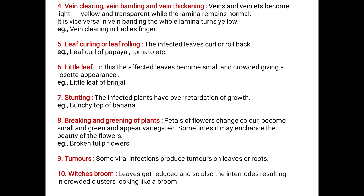Next comes vein clearing, vein banding, and vein thickening. In vein clearing and vein thickening, the veins and veinlets become light yellow and transparent while the lamina remains normal. In vein banding, the whole lamina turns yellow while the veins remain. The example for vein clearing is lady's finger.